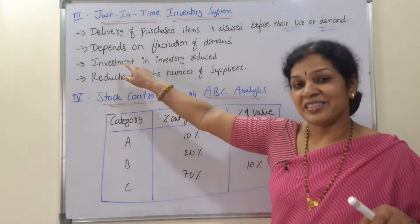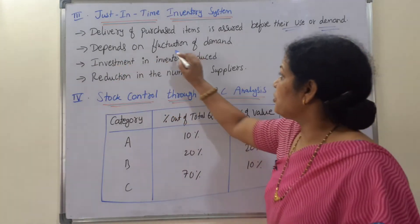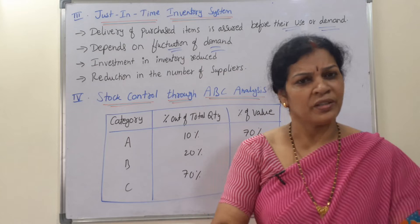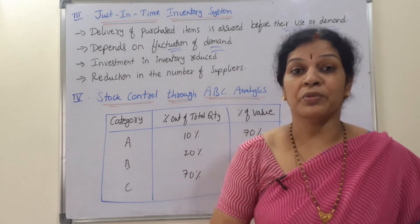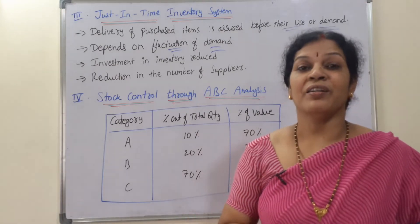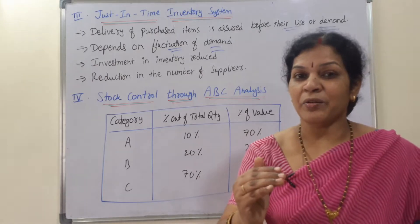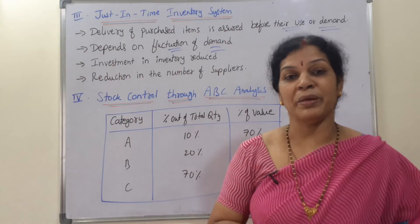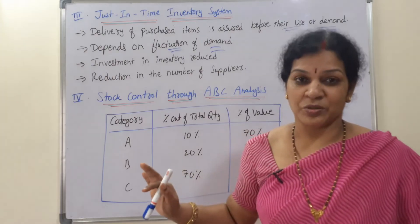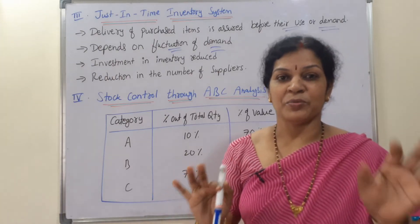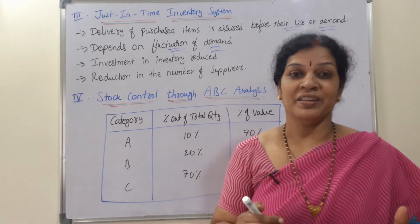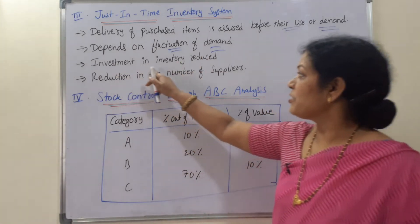The second feature is that the JIT system depends on the fluctuation of demand. If we need less quantity of goods, we order less. If there is more demand from customers, we order more quantity. Demand always fluctuates according to the requirements of the market, so ordering is based on this. It's not a fixed amount — it always varies depending on market demand.